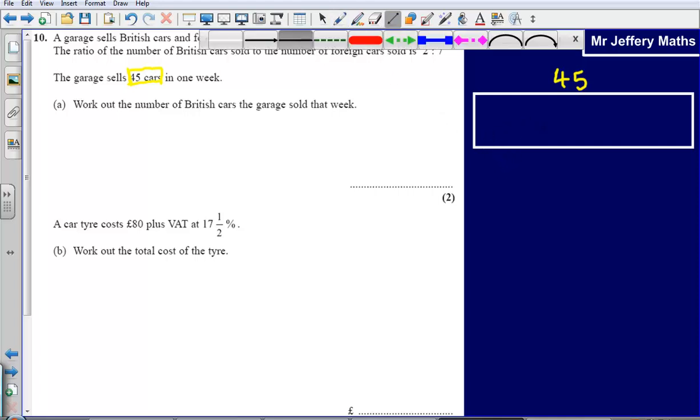Now the next thing I need to pay attention to is the ratio. Now the ratio tells me what I'm going to split my bar into. So I've got a ratio of 2 to 7, 2 parts to 7 parts, so I need to split my bar of 45 into 9 parts in total.